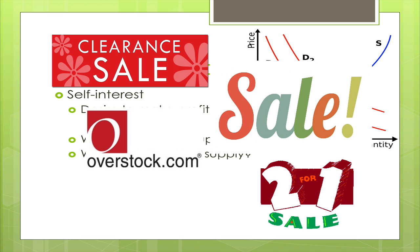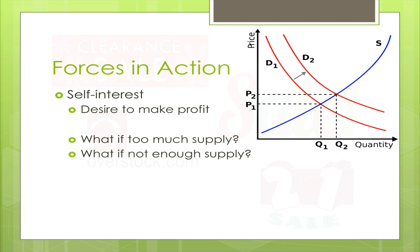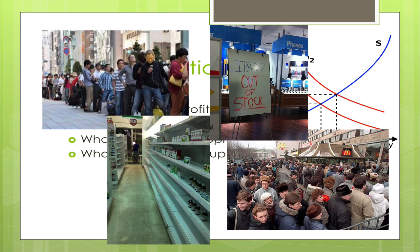The flip side: what if a company makes a new widget and they don't understand how amazingly awesome it is and how great it's going to sell? All of a sudden the demand for that is through the roof — people think this widget is amazing, it practically cures cancer. And the supplier, unfortunately, has not made enough supply to keep up. Again, they are missing out on the potential for profit because they could be selling millions of these. But if they only made 100 because they didn't think it would do very well, then they are missing out on potential profit.